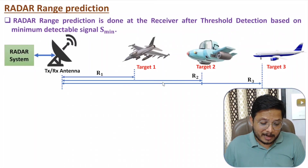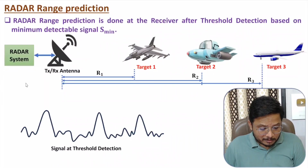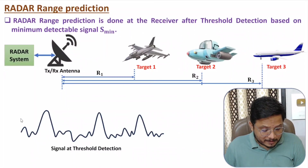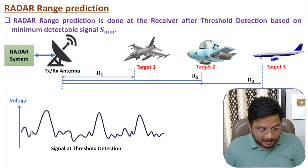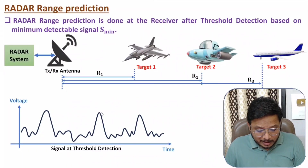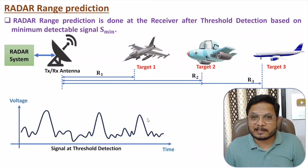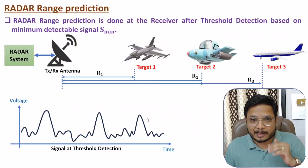In the radar system, the decision-making box processes a signal where the y-axis is voltage and the x-axis is time. In this signal characteristic, you can clearly observe three peaks corresponding to the three targets. Whether a target exists or not is decided based on comparison with a threshold value.